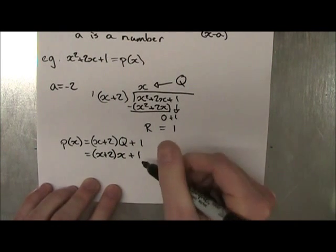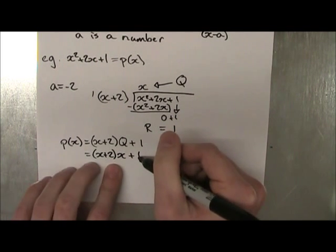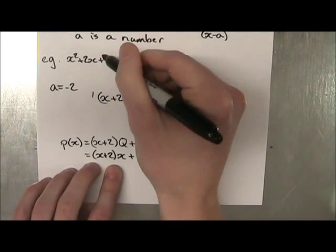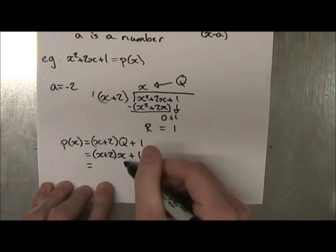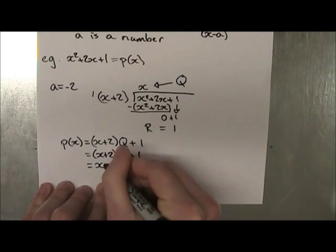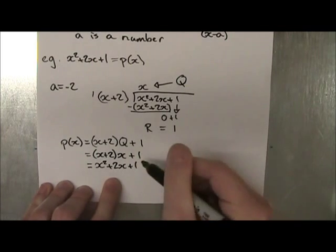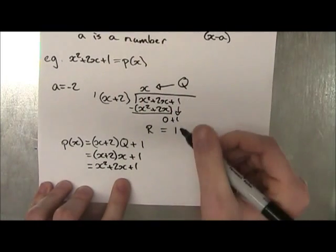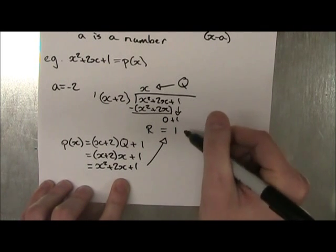Now what this is telling us is that if this is correct, then this should give us our polynomial here. So let's develop this and see if it gives us the same thing. So x times x is x squared plus 2x plus 1. And as you can see, it gives us exactly the same thing. So 1 must be the remainder. So this is true.